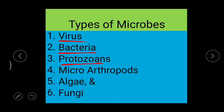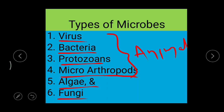Then there are protozoa, and microarthropods — these are not technically microorganisms but because of their tiny size they can be considered as microbes. Then there are algae and fungi. Among them, the first four types — viruses, bacteria, protozoa, and microarthropods — belong to the animal kingdom. Algae and fungi belong to the plant kingdom.